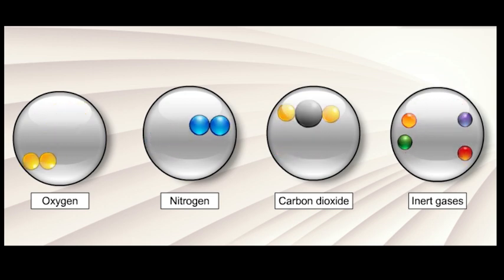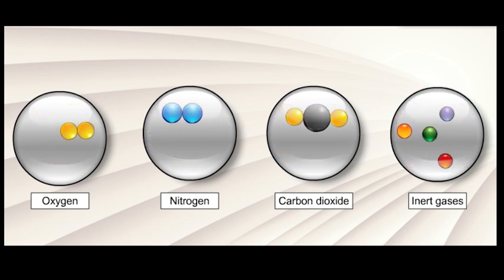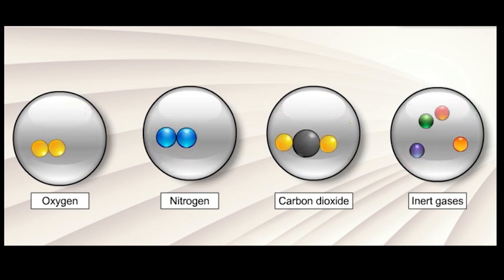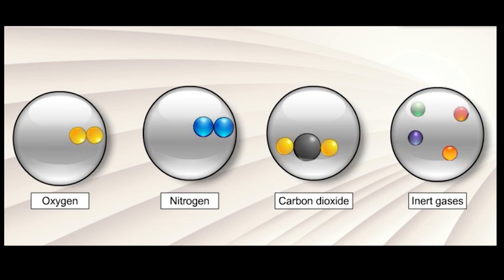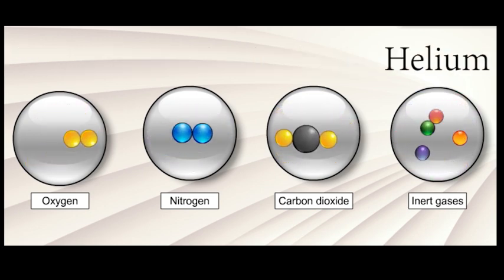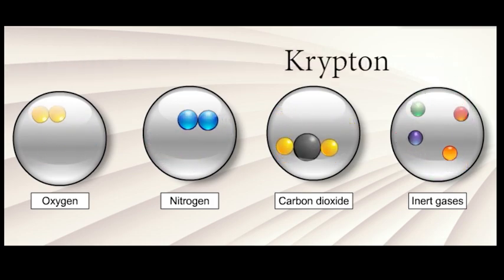Gases make up the biggest portion of air. The gases that make up air are oxygen, nitrogen, carbon dioxide, and inert gases such as helium, argon, neon, xenon, and krypton.